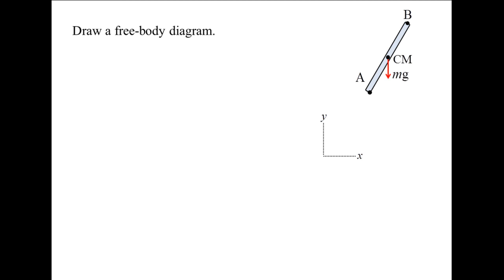Start by drawing a free body diagram of the slab. Identify your coordinate system and label the positive direction of your coordinates. In this case, a rectangular coordinate system is more convenient. Draw the external forces acting on the slab. The weight acts at the center of mass and points downward. Its magnitude is the mass of the slab, M, times the gravitational acceleration, G. The normal force exerted by the dolly on the slab, N, acts perpendicular to the surface. The tension in the cable attached to point B is unknown, but its direction can be determined through geometry.